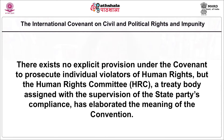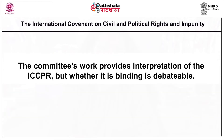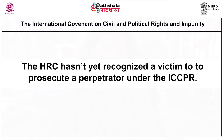The International Covenant on Civil and Political Rights, or the ICCPR, came about to impose a duty to prosecute general human rights violations, apart from those covered in specific conventions such as the Torture Convention, the Apartheid Convention, and the Slavery Convention. There exists no explicit provision under the covenant to prosecute individual violators of human rights. But the Human Rights Committee, or the HRC, a treaty body assigned with the supervision of state party compliance, has elaborated the meaning of the convention, though whether its work is binding is debatable.